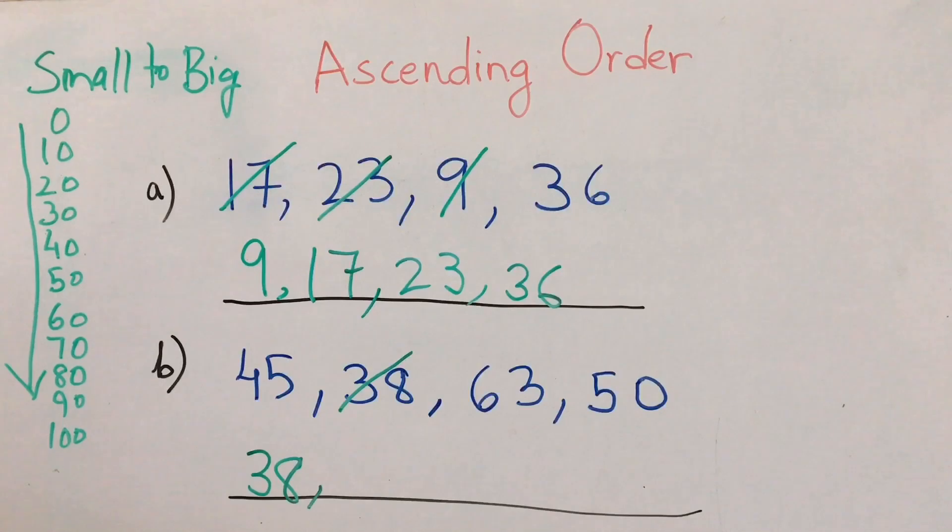Then we have 45, 63, and 50. So we'll see from 30 to 40, 40 to 50. Do we have any number? Yes, we have 45. So we'll write 45 and we'll cut this number.